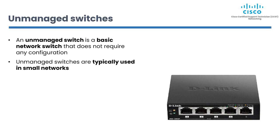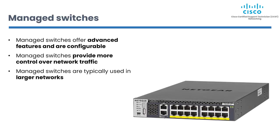Let's talk about the types of switches. First is an unmanaged switch — a basic network switch that does not require any configuration. It operates using default settings and does not offer advanced features. Unmanaged switches are typically used in small networks where simplicity is more important than customization or control. Next are managed switches, which offer advanced features and are configurable through a web-based interface, command line interface, or dedicated software. Managed switches provide more control over network traffic and can be used to set up VLANs, prioritize network traffic, and configure security settings. They are typically used in larger networks where control and customization are necessary.